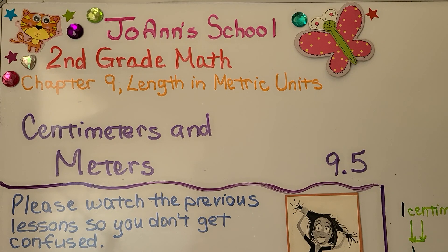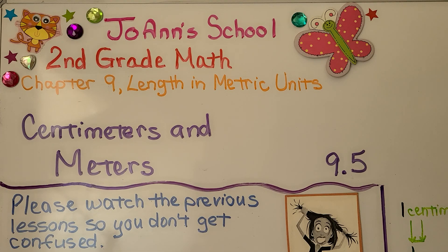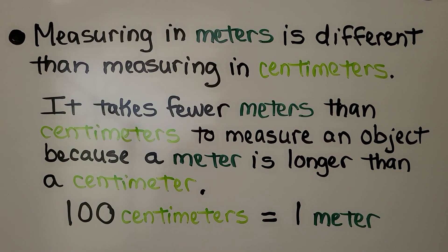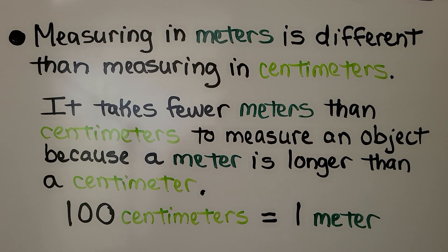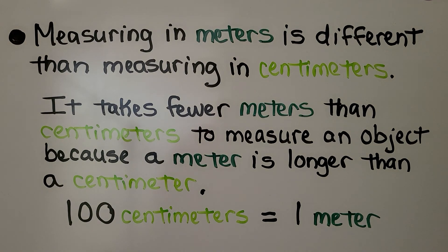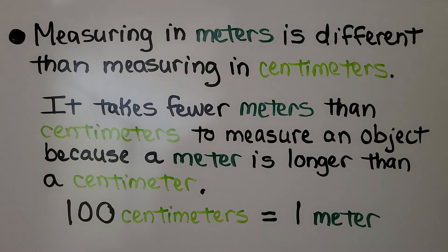Lesson 9.5, centimeters and meters. Measuring in meters is different than measuring in centimeters. It takes fewer meters than centimeters to measure an object because a meter is longer than a centimeter. 100 centimeters is equal to one meter.